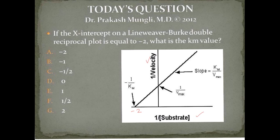Y-intercept is 1 over Vmax and x-intercept is minus 1 over Km. Why the minus sign here? It simply indicates that this line is joining on the other side of the zero.